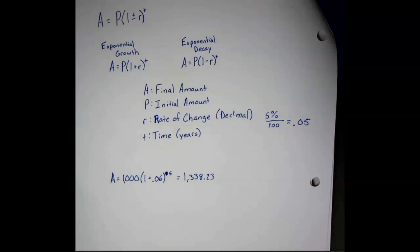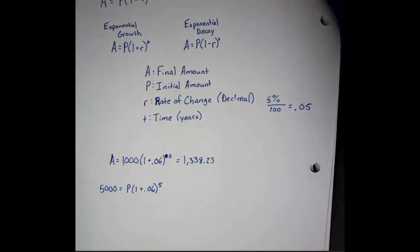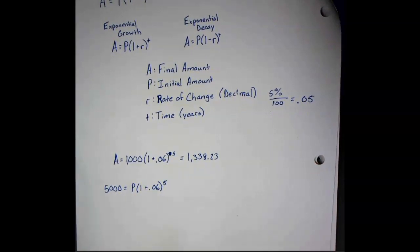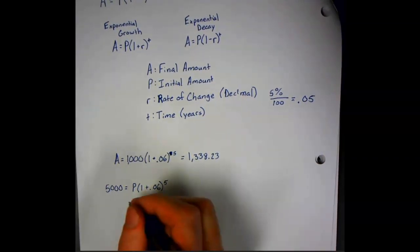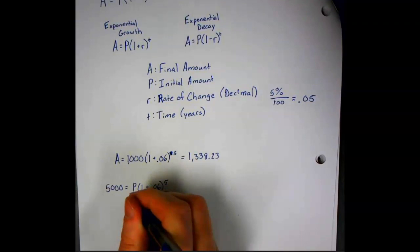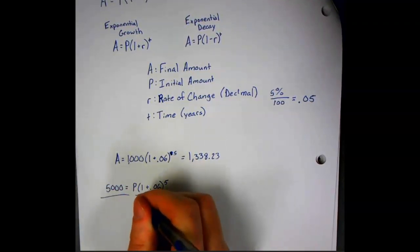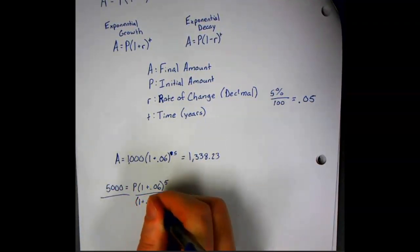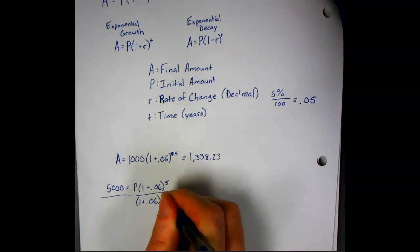If we were going to end up solving for P, we'll try this problem. First we need to make this so we set the equation P equals whatever it is. So we'll divide both sides by that 1 plus 0.06 to the fifth.